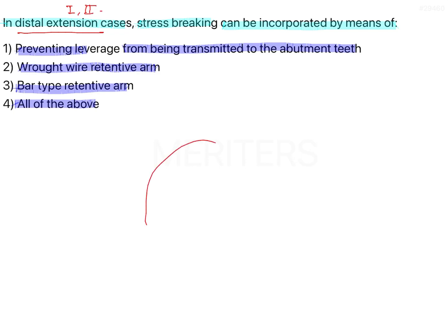So the denture is going to swing along an axis. For example, if these teeth are all present and this is the edentulous area, the denture tends to swing. So all the load is going to come on the terminal abutment.